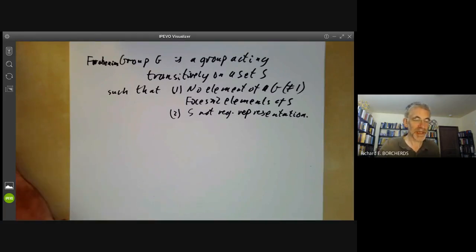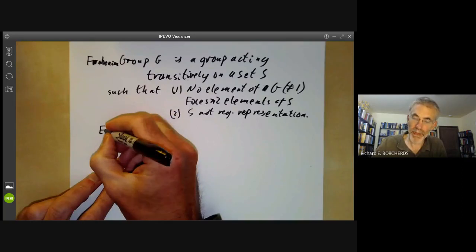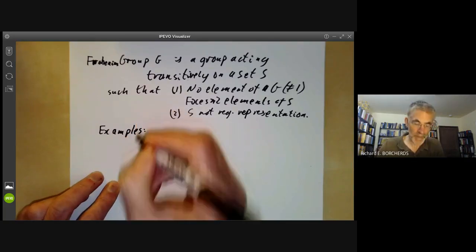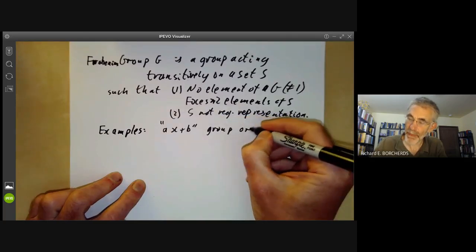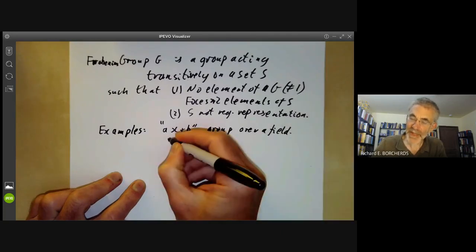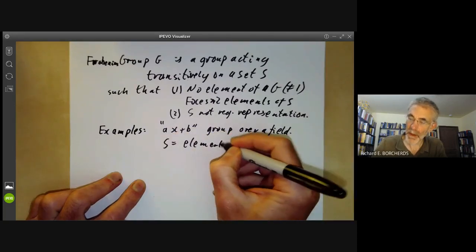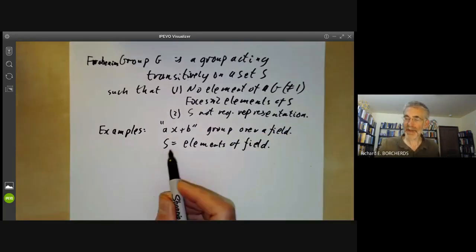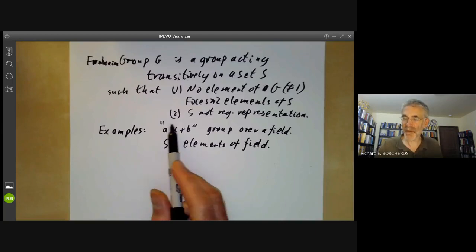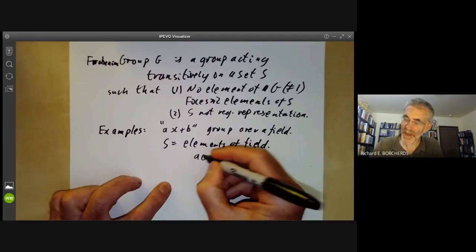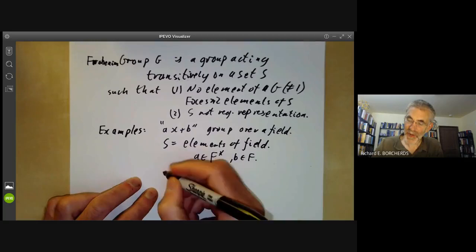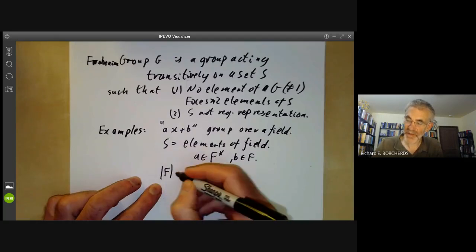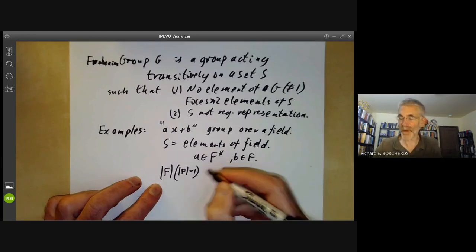So what examples have we seen of Frobenius groups? Well, first of all, we have the ax plus b group over any field. Here the set S is the elements of the field. And the group just consists of all transformations of the form ax plus b, where a is a non-zero element of the field and b is an element of the field. And this group obviously has order the number of elements of the field times the number of elements of the field minus one, at least if the field is finite.